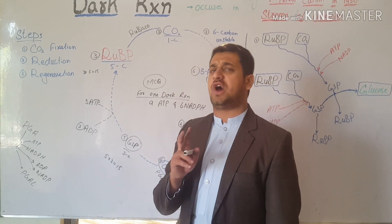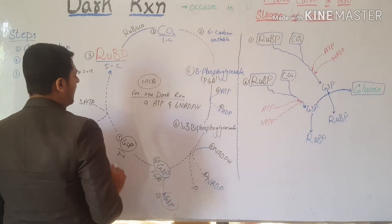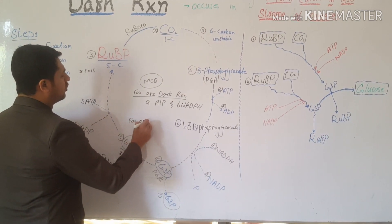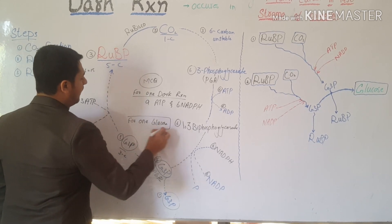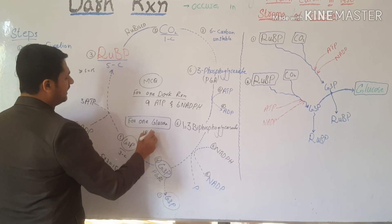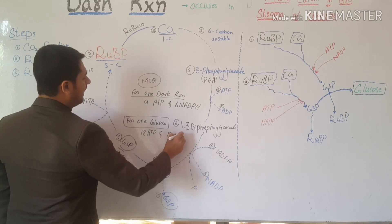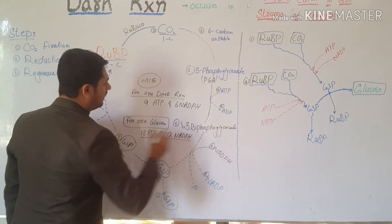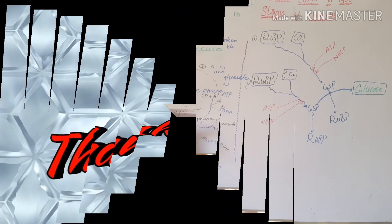Since two dark reactions are needed for the synthesis of one glucose molecule, for one glucose we need 9 × 2 = 18 ATP and 6 × 2 = 12 NADPH. So 18 ATP and 12 NADPH are required for the synthesis of one glucose molecule.